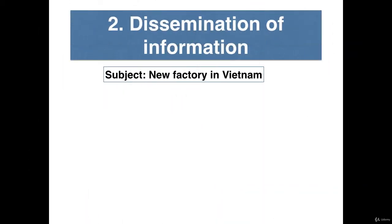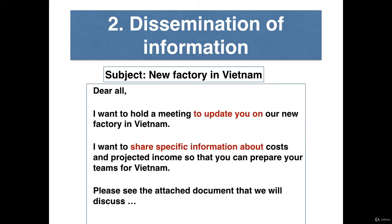In our second example, the facilitator explains that the meeting purpose is to update participants. Dear all, I want to hold a meeting to update you on our new factory in Vietnam. I want to share specific information about costs and projected income so that you can prepare your teams for Vietnam. Please see the attached document that we will discuss. Language in the email that shows it is an information meeting includes: 'To update you,' 'Share specific information about.' Other useful language could be: 'Give you details,' 'Keep you in the picture about.'